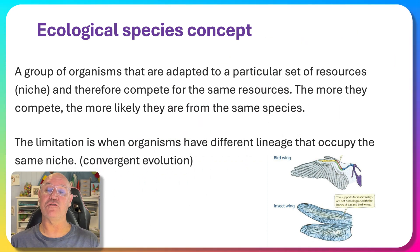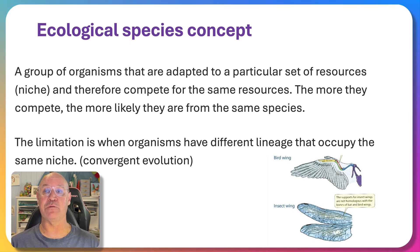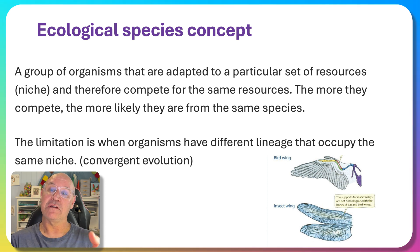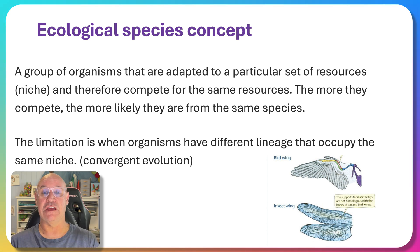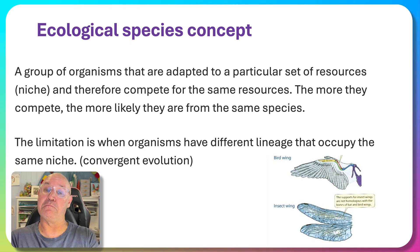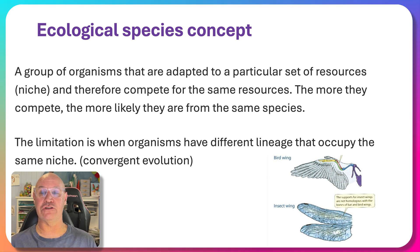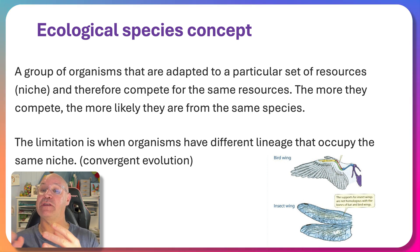There are actually multiple species concepts, but one more to consider is the ecological species concept. It looks at whether organisms are of the same species by whether they are adapted to a particular set of resources or niche, and therefore competing for the same resources. The competitive exclusion principle states that no two species can occupy the same niche at the same time. So if organisms have exactly the same adaptations and compete for exactly the same niche, they're likely the same species. However, there are limitations — convergent evolution means different species can develop adaptations to occupy the same niche even though they're entirely different.